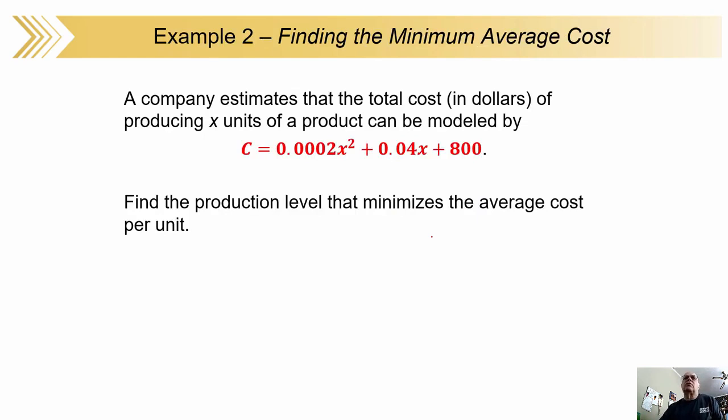You take the total cost, divide by how many you're actually making, and you get the cost per pen. It's the average cost function, cost per unit. They also know that the total cost producing x units is given by this model. Find the production level, the x in other words, that minimizes the average cost per unit.